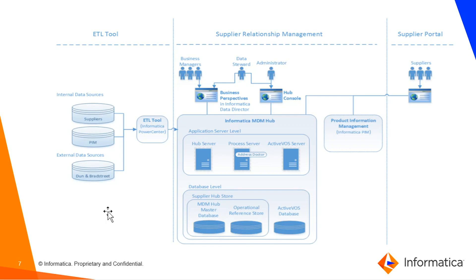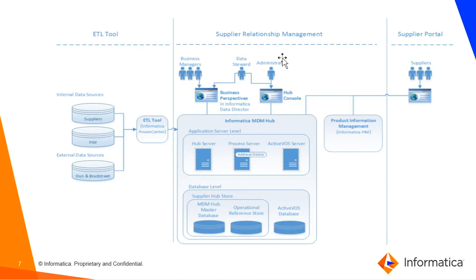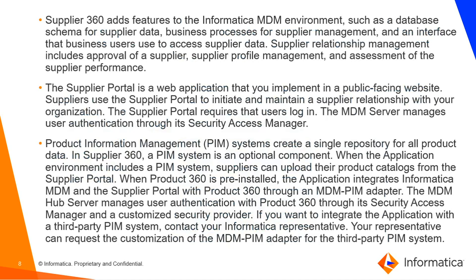The Supplier Portal is a business-friendly, easy-to-use interface where suppliers can register themselves or business users can view supplier information. Supplier 360 adds features to the Informatica MDM environment such as a database schema for supplier data, business processes for supplier management, and an interface for business users to access supplier data. Supplier Relationship Management includes approval of suppliers, supplier profile management, and assessment of supplier performance. The Supplier Portal is where suppliers can request to create an entry for themselves, which then goes through the approval process via scheduled workflows.